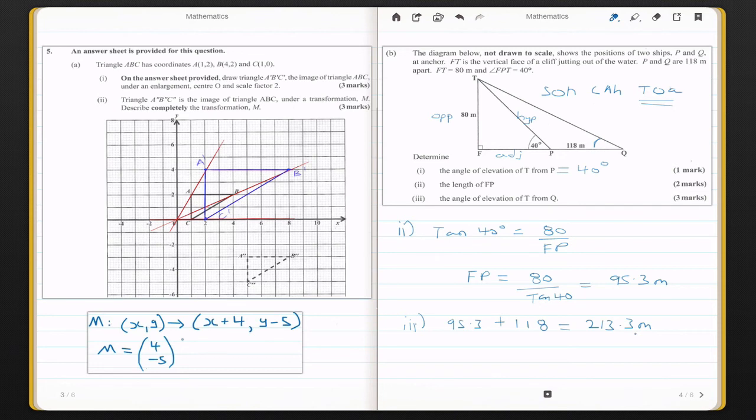Now that we know the full length of F to Q, we can work on finding our angle at Q. We do this by finding the tan inverse of our opposite, which would be 80, and our adjacent, which will be this full length that we just calculated. Tan inverse 80 over 213.3, and that will give us an angle of 20.6 degrees.